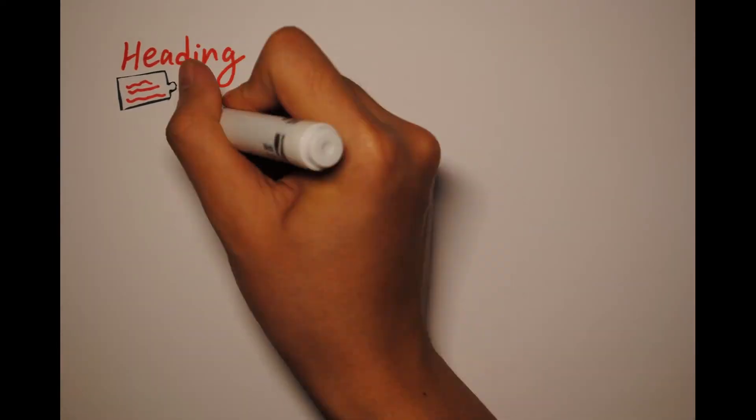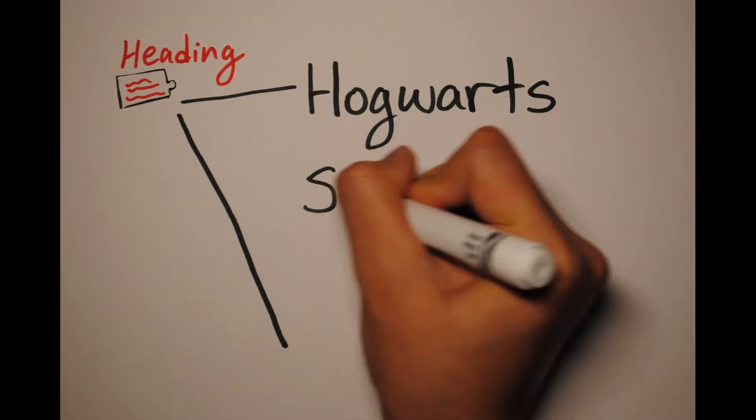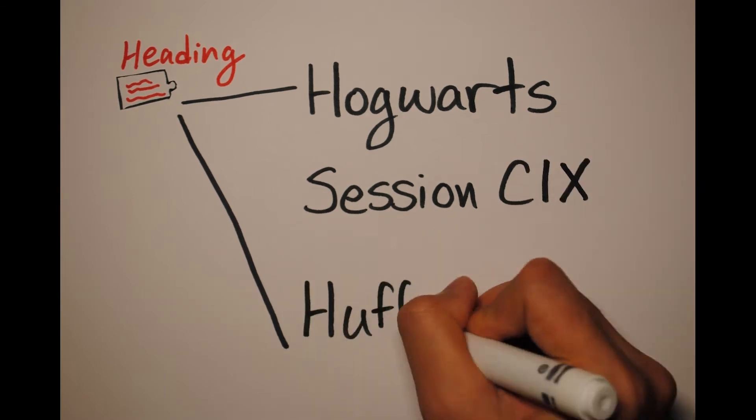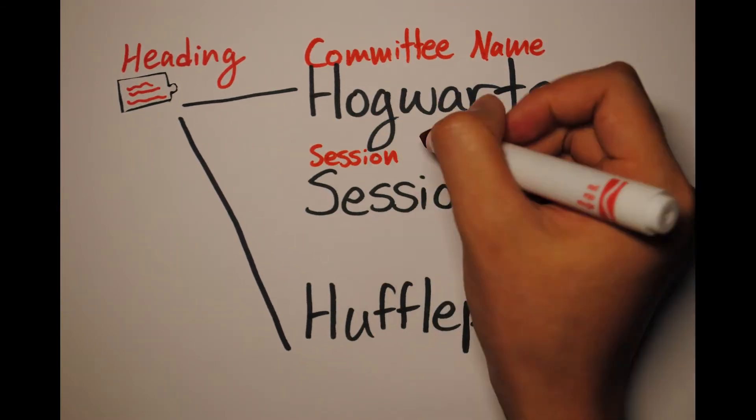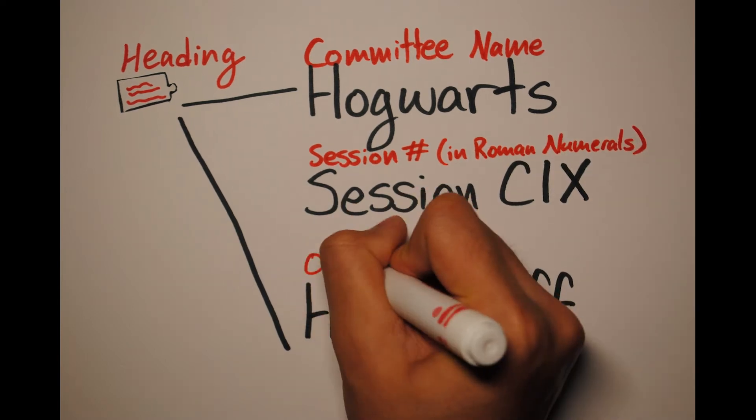Let's start with the heading. First, make sure your type is left justified. Your header should include the name of your committee, the session number of the conference, and your country's full name.